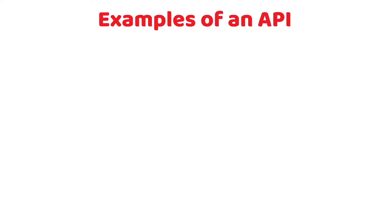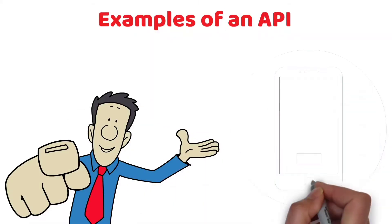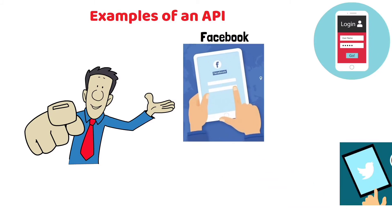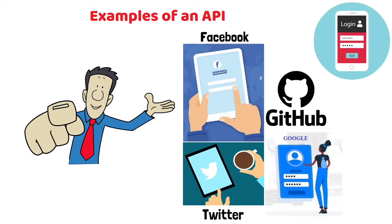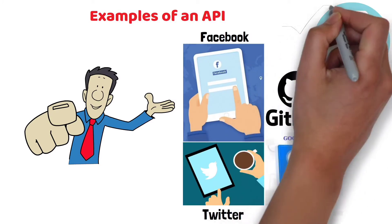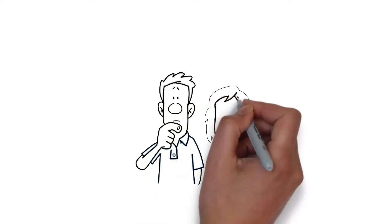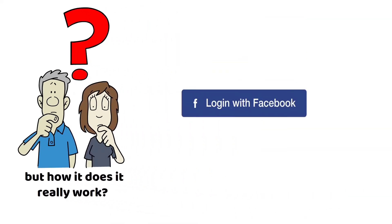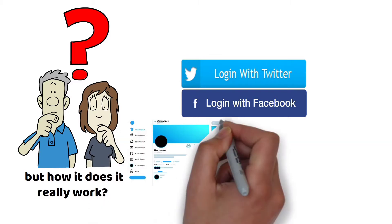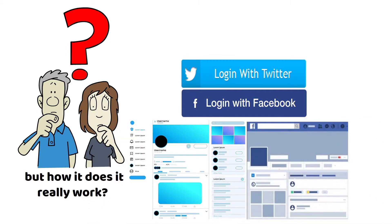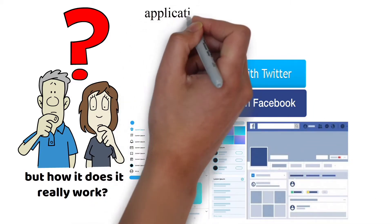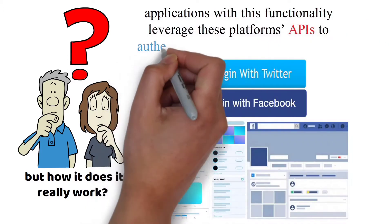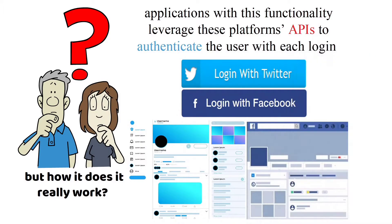Examples of an API: did you ever try logging into an app or a website and notice the login using Facebook, Twitter, Google, or GitHub? It makes login very convenient. But how does it really work? When you click on login using Facebook or Twitter, the apps, instead of logging into users' actual social media accounts, leverage these platforms' APIs to authenticate the user with each login.